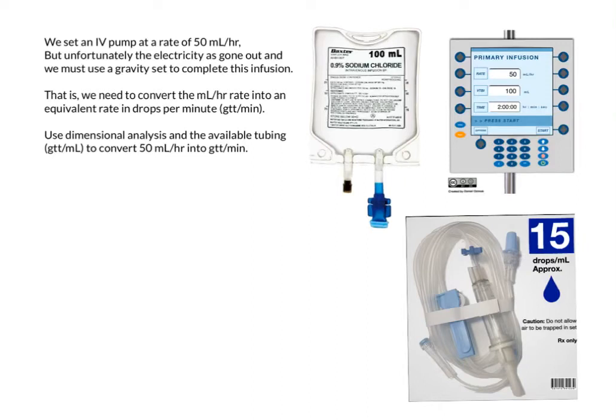In this problem, we're told that we have set an IV pump at a rate of 50 mLs per hour. However, the electricity has gone off and we're not going to be able to use the pump to infuse this medication, this NS, and so we need to grab what's called a manual set or gravity set to complete this infusion. So we need to convert the milliliter per hour rate into drops per minute.